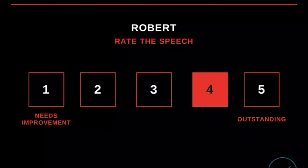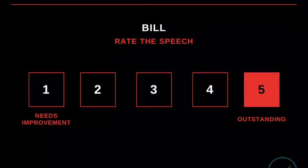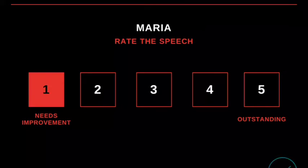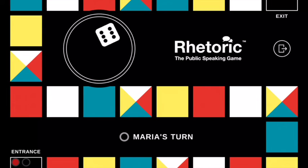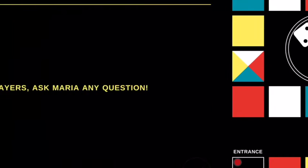Now the other players get to rate the speech. Robert gives her a four. Bill loved it — he gives her a five. Maria wasn't too impressed, she gave it a one. Now it's Maria's turn. And of course, when you rate, you can do this confidentially. Nobody has to see the score you give.